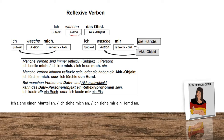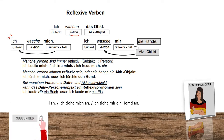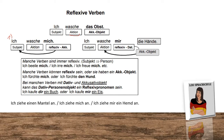The action 'to wash' can also be reflexive. For example, option one: 'Ich wasche mich' — I wash myself. The main aspect we need to remember is that the subject and the object must be the same. 'Mich' in English would be 'me.'